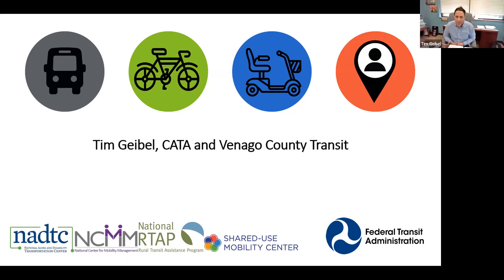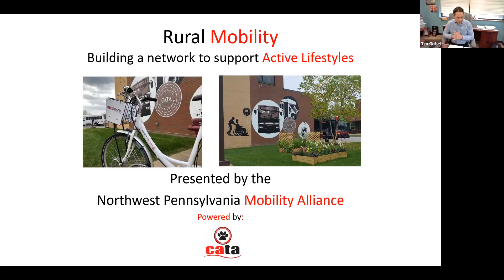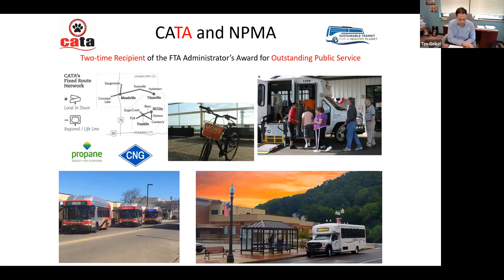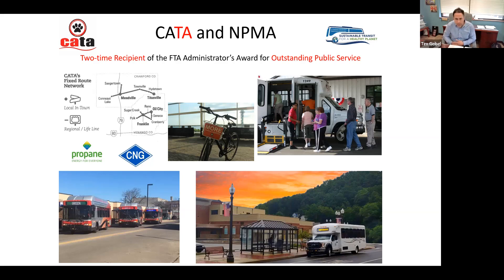CATA is a rural public transportation authority — a multi-county authority providing services over 1,700 square miles in Northwest Pennsylvania, just south of Erie County. We have a fleet of 65 vehicles and 93 staff serving our organization daily. Our total operating budget is about $6.1 million. We provide fixed route services in our city hubs and ADA paratransit service, plus county-wide door-to-door services funded in part by the Pennsylvania Lottery.